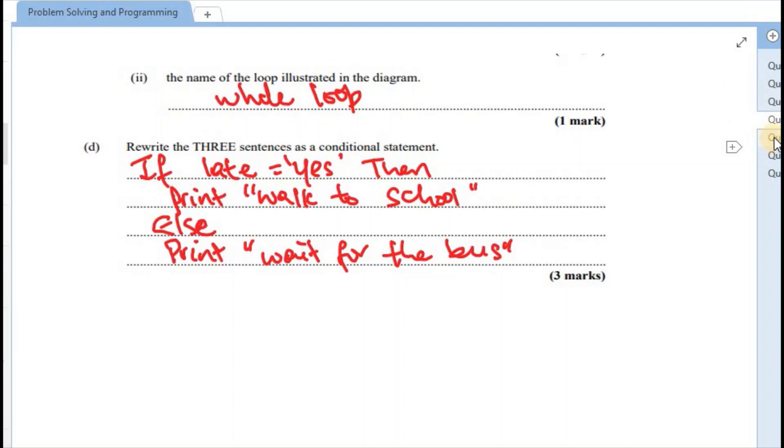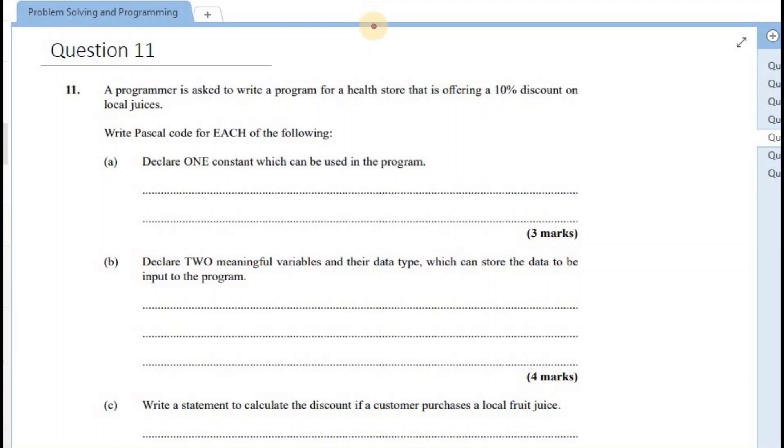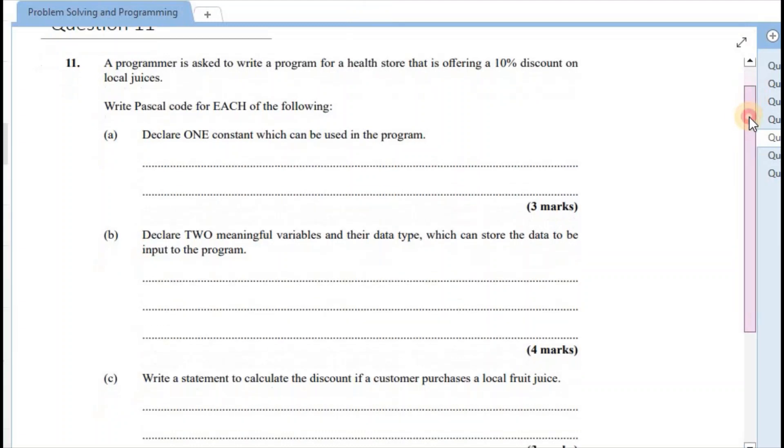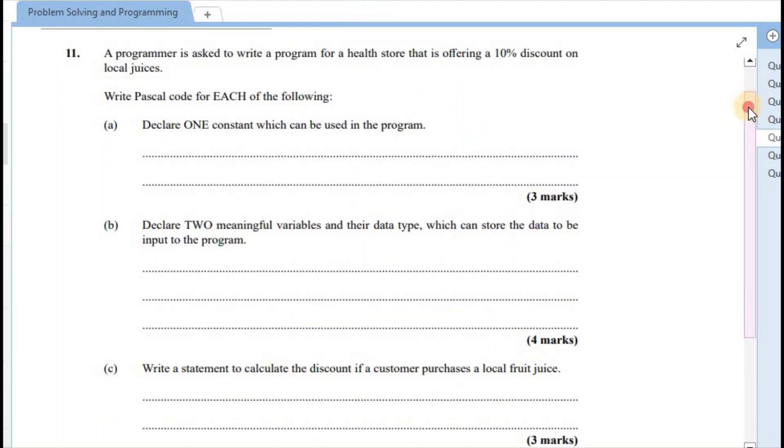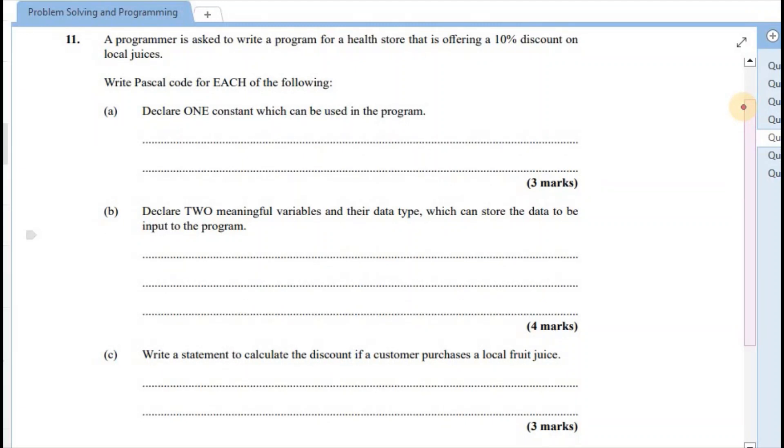Moving on to question 11. It says that a programmer is asked to write a program for a health store that is offering a 10% discount on local juices. First, we are asked to write the Pascal code for each of the following. The first one says to declare one constant, which can be used in the program. Constant is referring to that data which has a fixed value. Right. So in this case, there is a discount of a fixed value of 10%. So that would have been an example of constant.